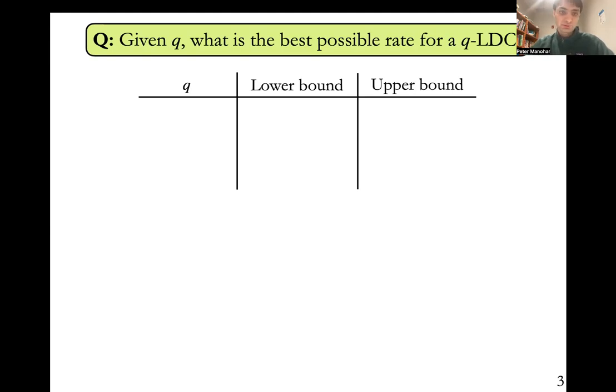For q equals one, this is kind of a trivial value for q. A one-query locally decodable code doesn't really make much sense. So the first non-trivial value for q is q equals two. Here the construction of the Hadamard code achieves a block length n that's 2^k. It's exponential in the number of bits in the message k. You might think this is pretty bad, except there is in fact a matching lower bound showing that n does have to be exponential in k. So up to a constant factor in the exponent, we actually know what the correct value of n should be as a function of k, at least when q equals two.